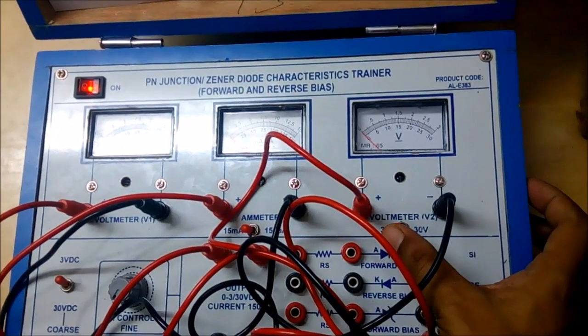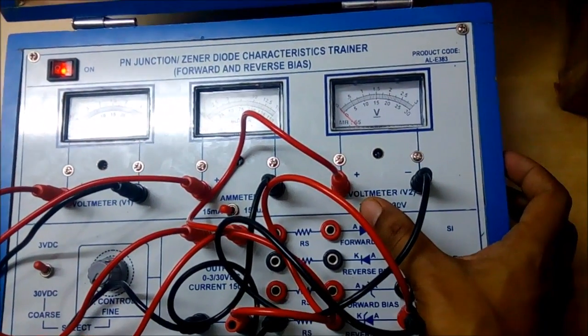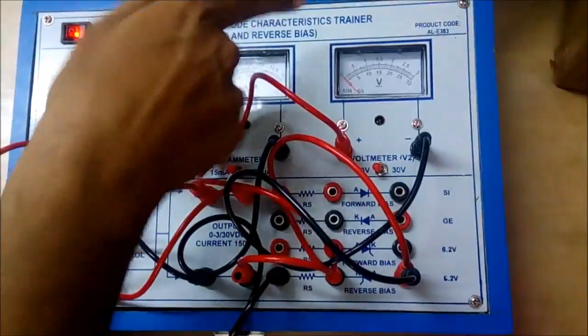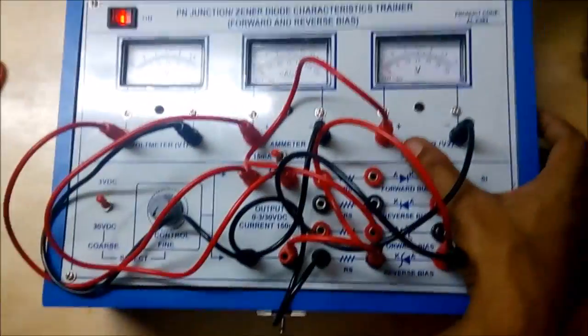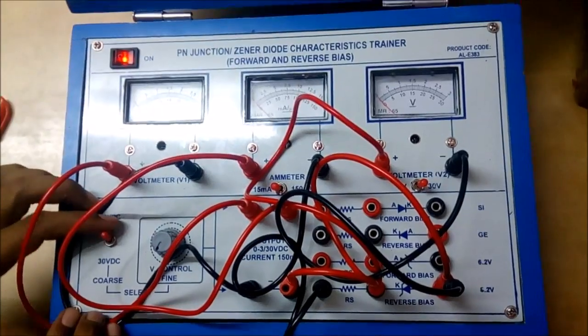Now we are setting the cutoff voltage of 8.2 of the zener diode, so it would not be enough. We are setting it to 30 volt. Here also we are converting into 30 volt.